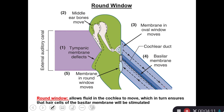There are two windows. The oval window, which is the gate for the inner ear — the stapes is attached to the oval window. On the opposite side there is the round window. The round window allows fluid in the cochlea to move under pressure, which stimulates the stereocilia to create an action potential. So if the round window is damaged, this can lead to neural deafness.